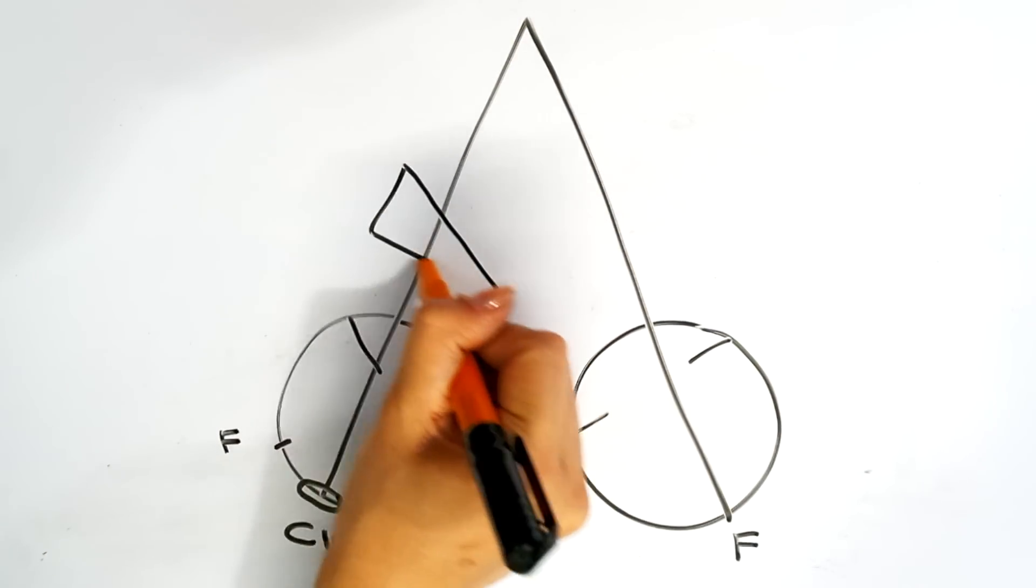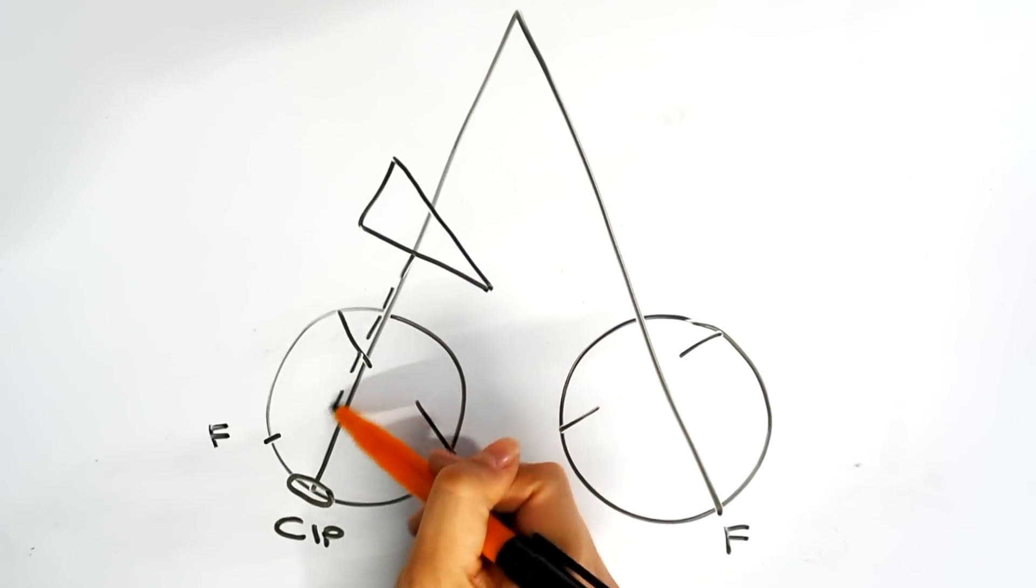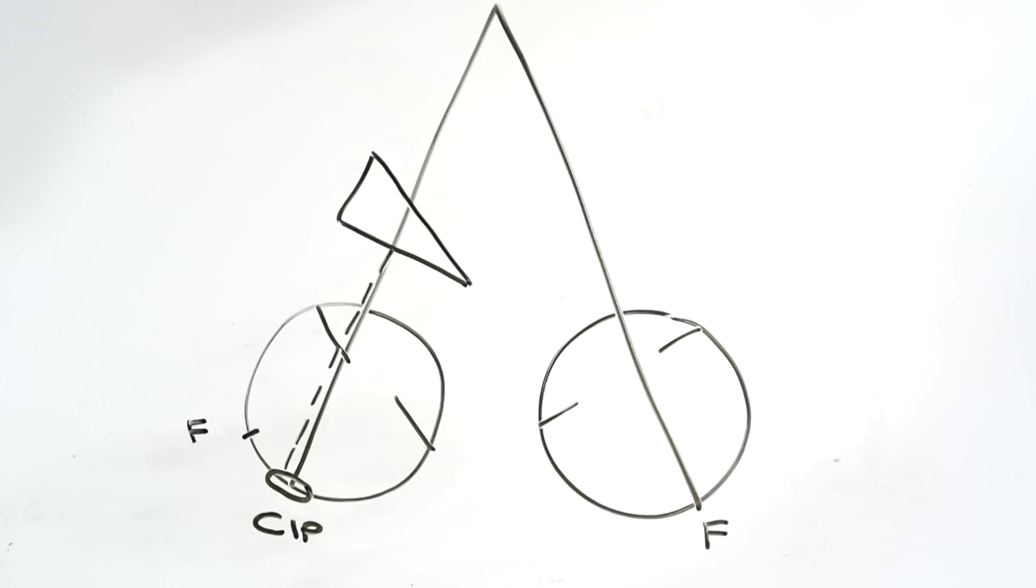We don't see a movement here as the prism has moved the image onto the extended Panum's fusional area. Therefore, there is no drive for the other eye to make that conjugate movement.